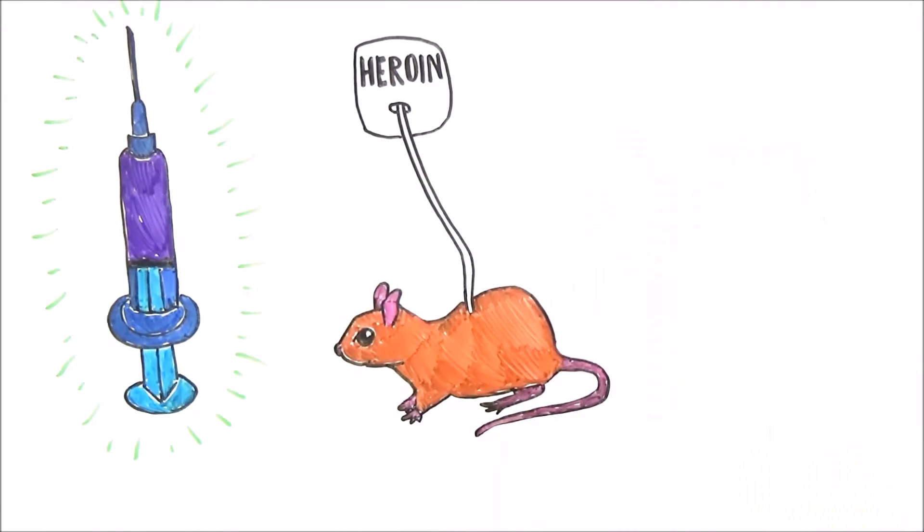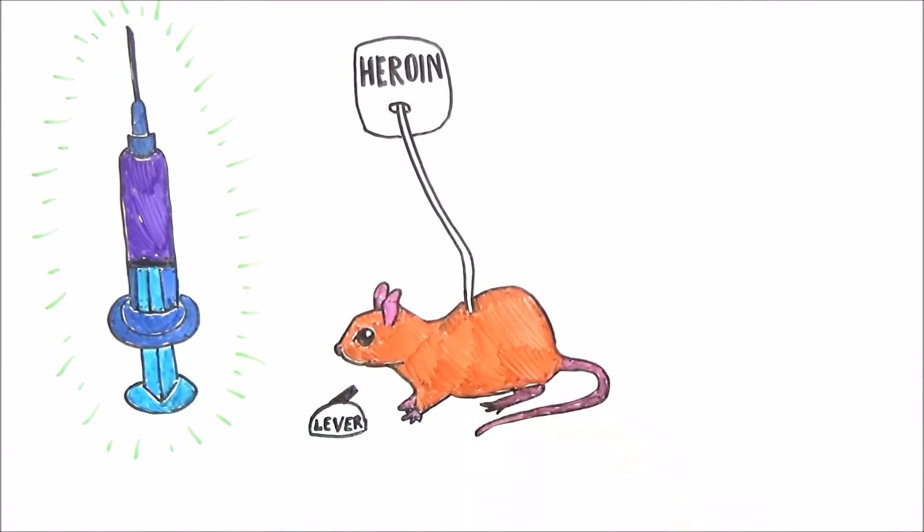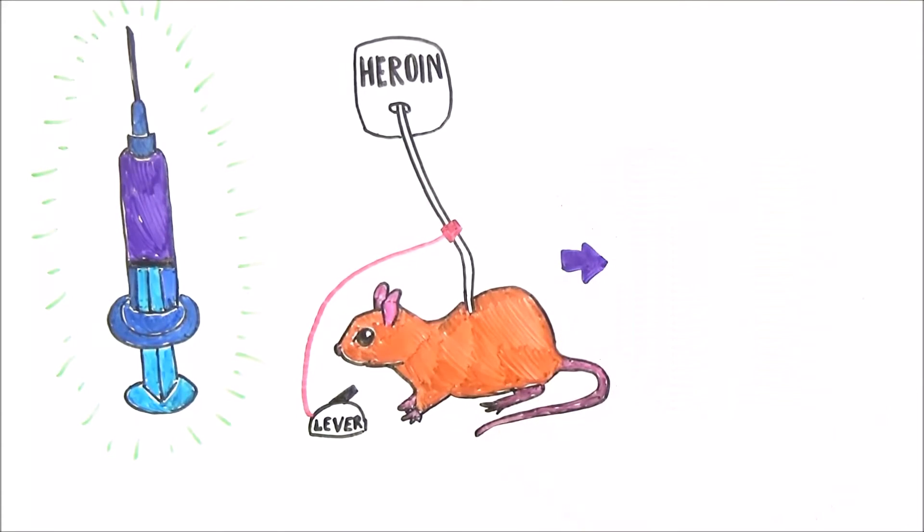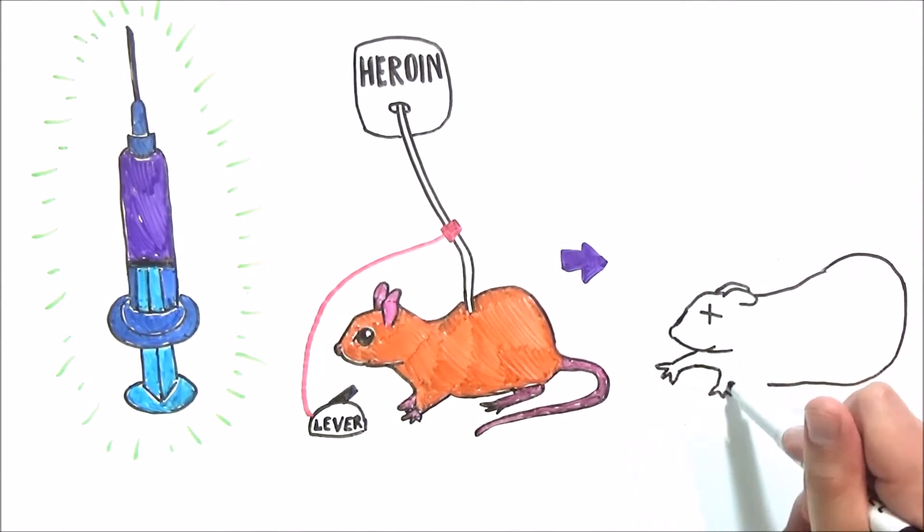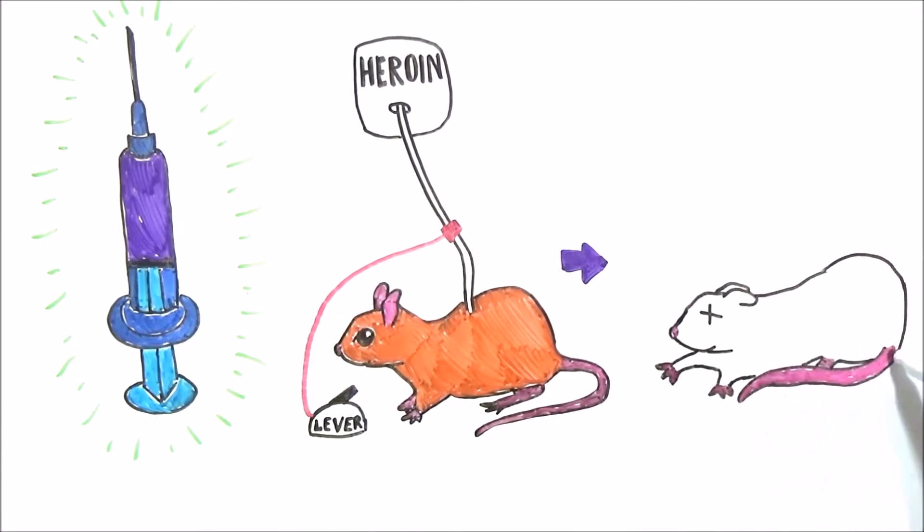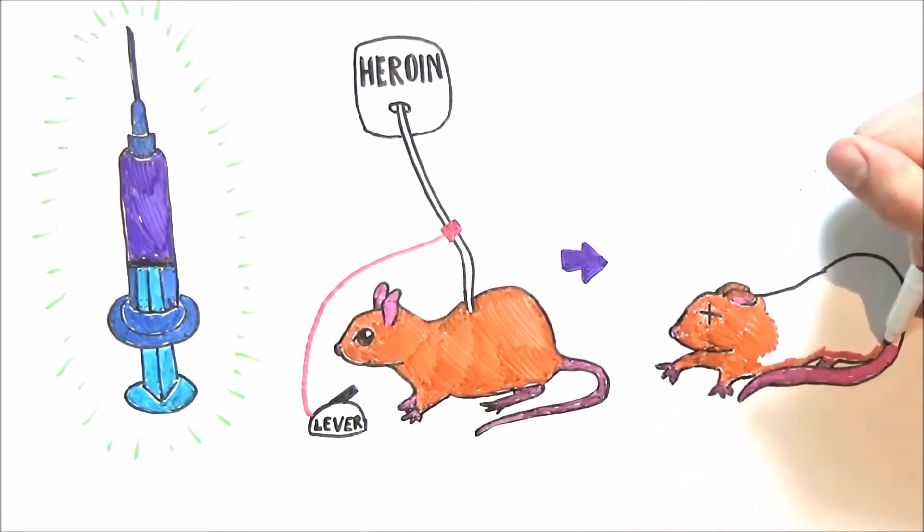The rats were then given the choice to self-administer the drugs as often as they liked using a lever. Advocates for the war on drugs were thrilled when the results showed that these rats self-administered an enormous amount of drugs, even until death. They argued that the same happens in humans and the war on drugs is justified.